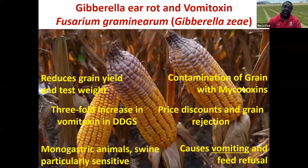The big question is: why the increase in Gibberella ear rot and vomitoxin over the last 10 to 15 years? It takes us back to the disease triangle. For disease, you need a susceptible crop, an aggressive pathogen, and favorable environmental conditions. So it has to be one or all three of these factors contributing to higher levels of Gibberella ear rot and vomitoxin over the last 10 to 15 years.